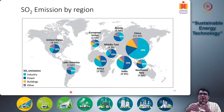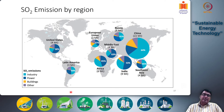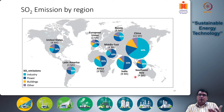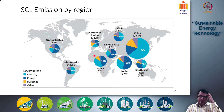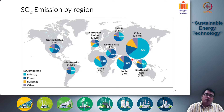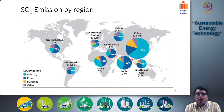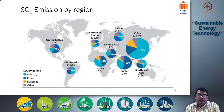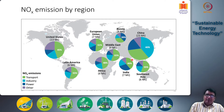Next we look at the emissions happening region-wise — what are the major sources of various important pollutants discussed so far. As expected, the largest sources of SO2 are in China and India, followed by Southeast Asia and the Middle East. China and India are the largest sources of SO2 emissions because they rely heavily on coal power plants for electricity production, and coal emits a lot of SO2.